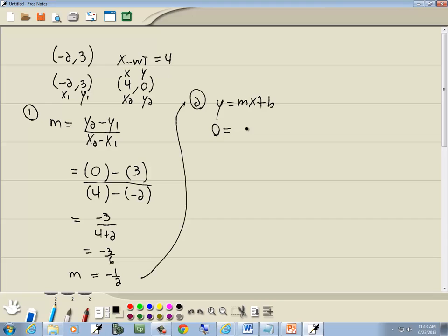So we said 0 is y, and m was negative 1 half, and x is 4, plus b. And then solve for b. Well, negative 1 half times 4 gives us negative 2, plus b. Take negative 2 to the left side, and we get b is equal to 2.